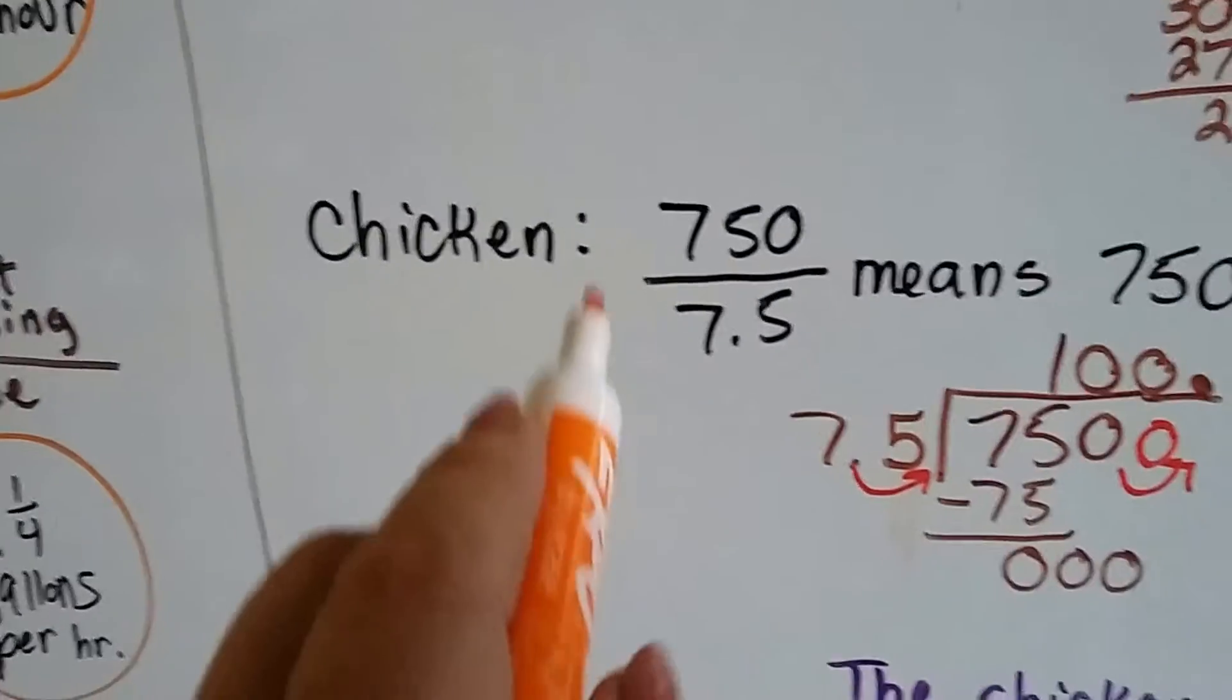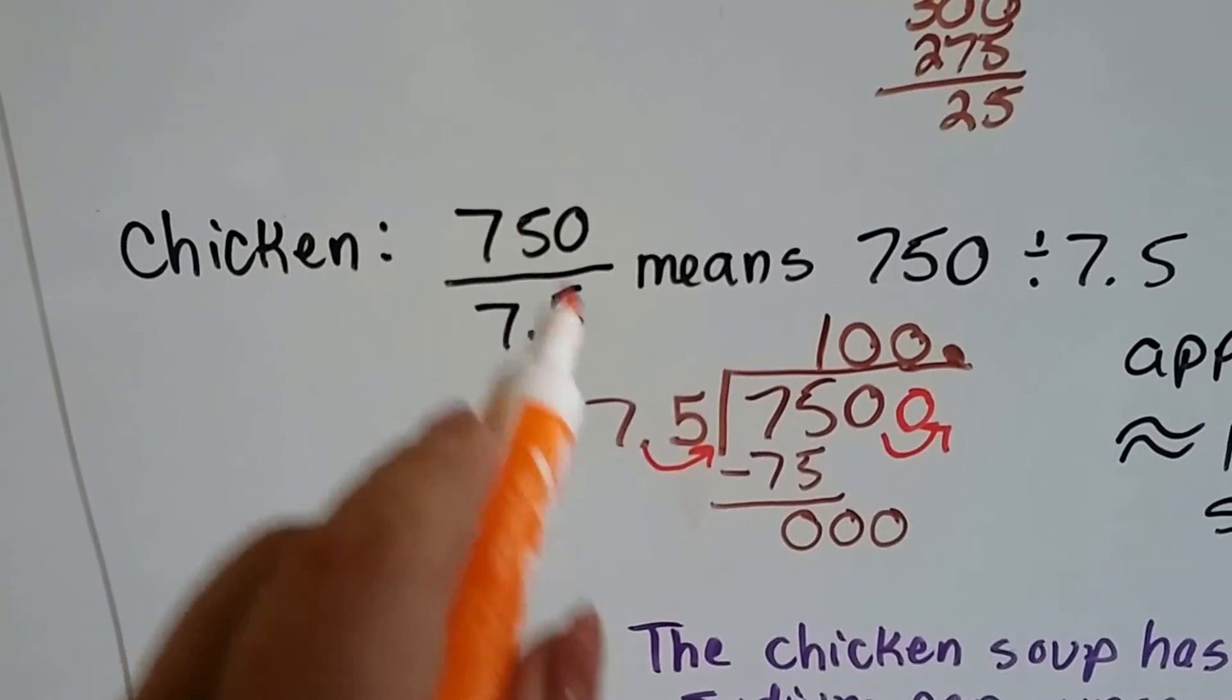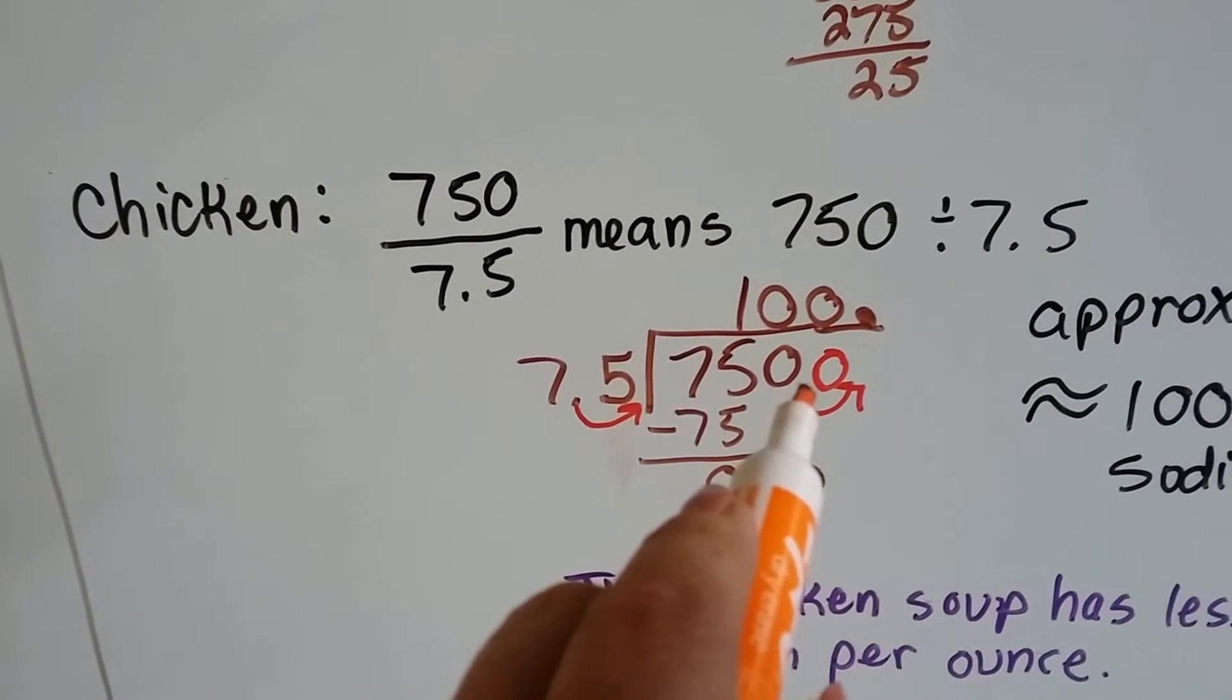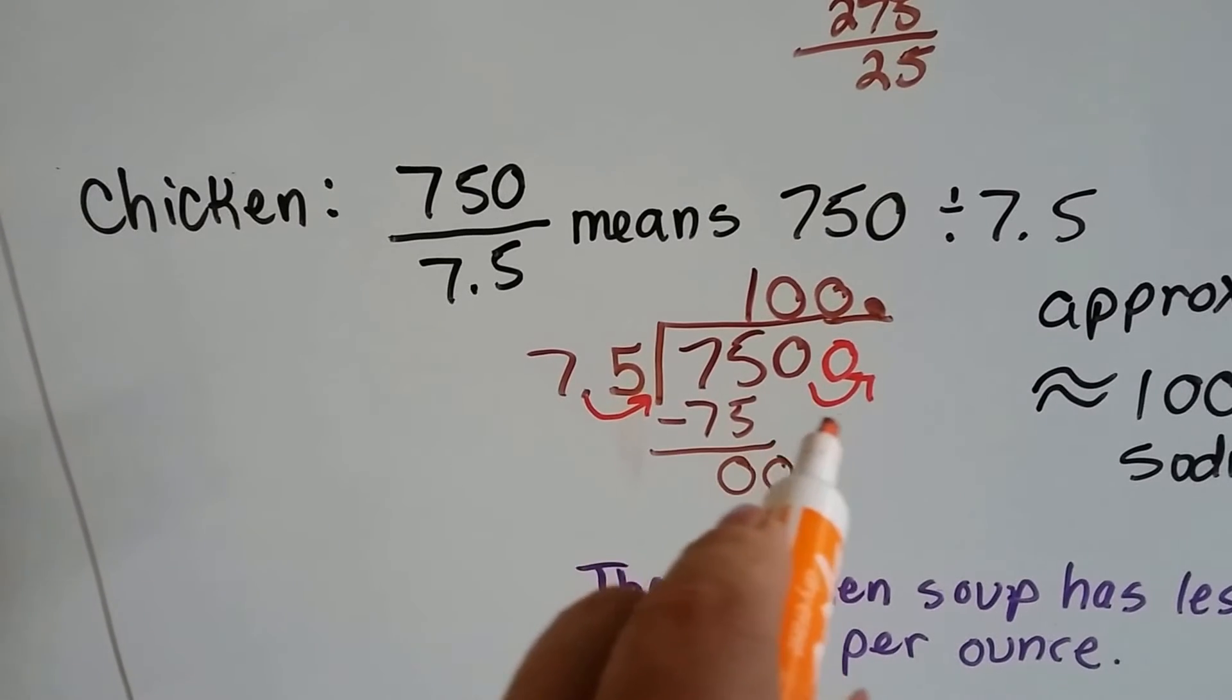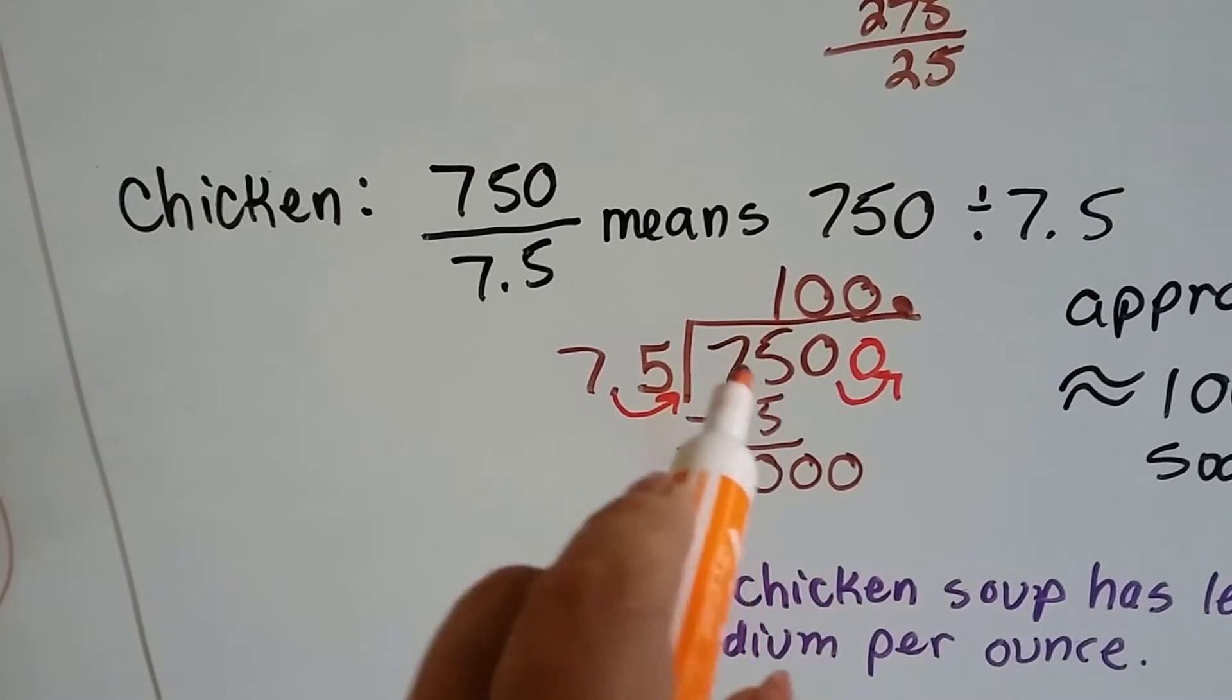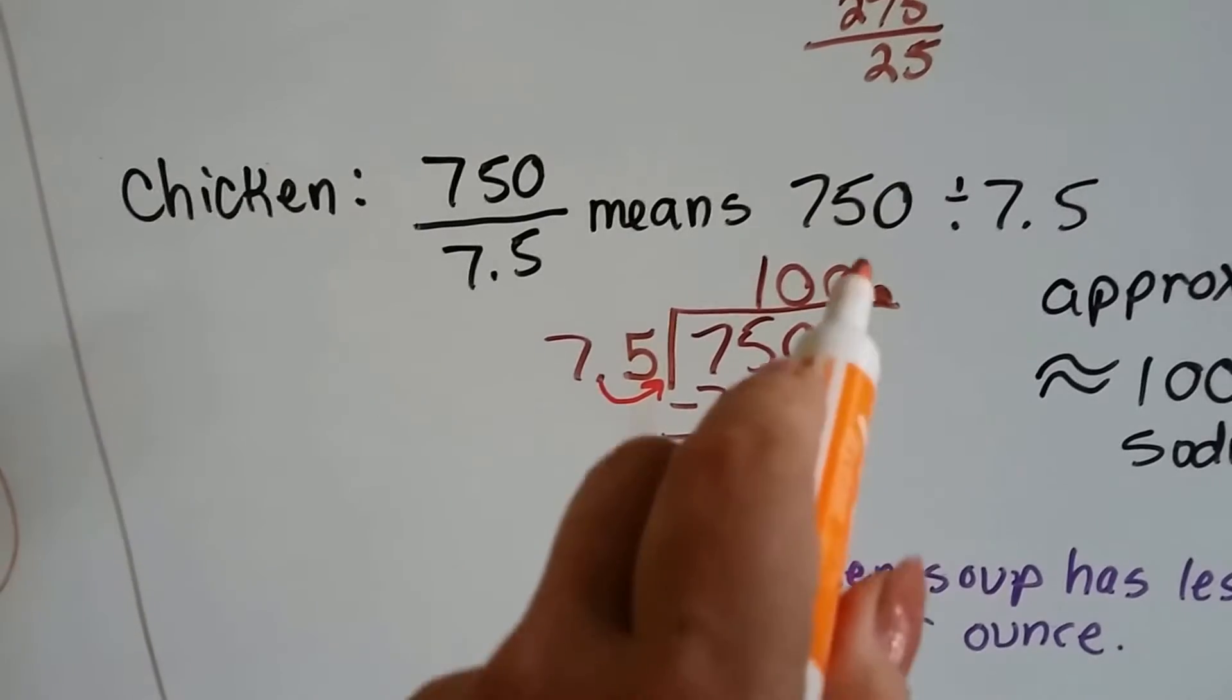Now I did the chicken. It was 750 milligrams in 7-and-a-half ounces. So I changed that to a 7.5 so I could do the division. I had to move the decimal point over in the 7.5 to behind the 5, which means I had to move the decimal point that would have been behind the 0 in the 750 over one space, and I had to add a 0. And I brought the decimal point straight up. 75 goes into 75 one time. And we drop down the 0. It can't go into the 0, so that's a 0. We drop the other 0 down. It can't go into that 0 either, so that's 0.